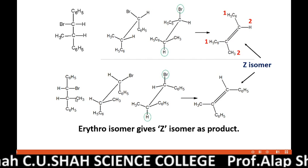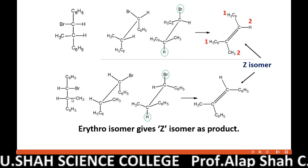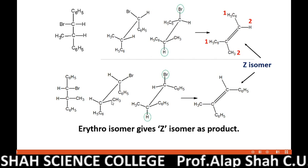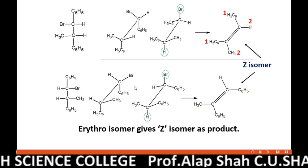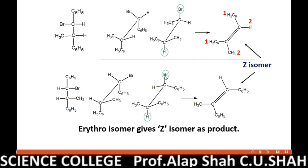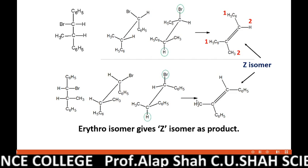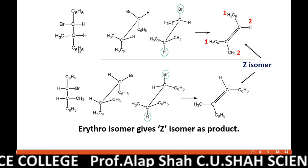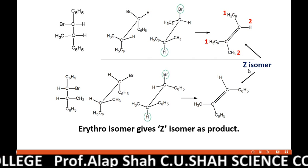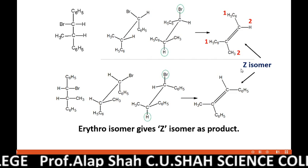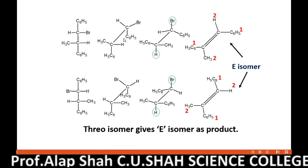This isomer is a mirror image of the first erythro isomer. The same analysis applies: converting to Sawhorse projection, attaining anti-planarity at 180 degrees, and it also produces the Z isomer. This means that both erythro isomers, on dehydrohalogenation, give rise to the Z isomer product.